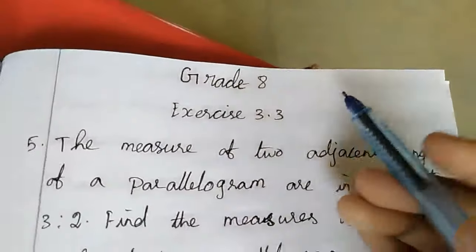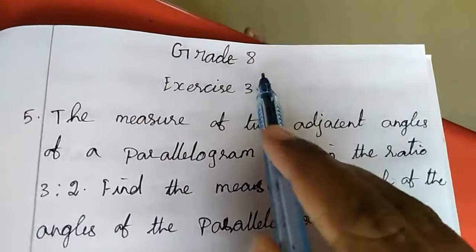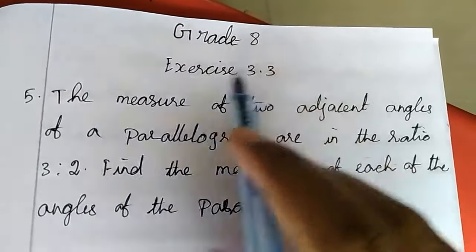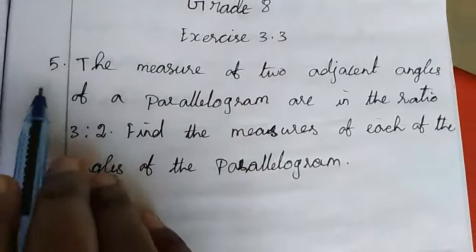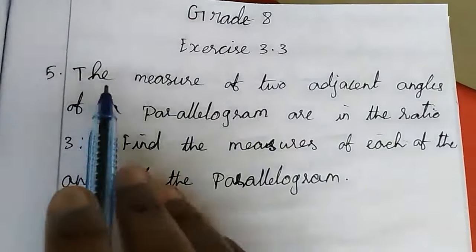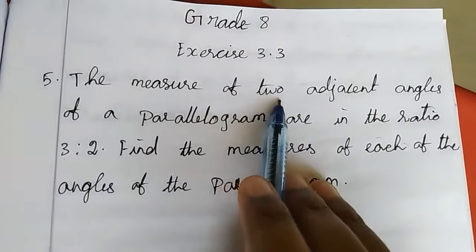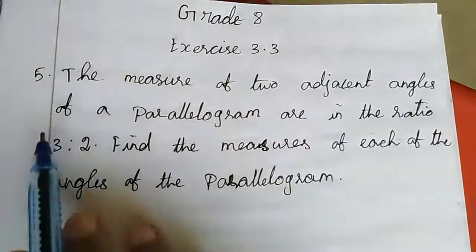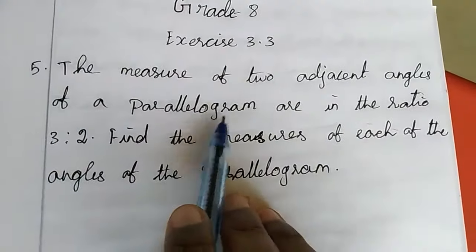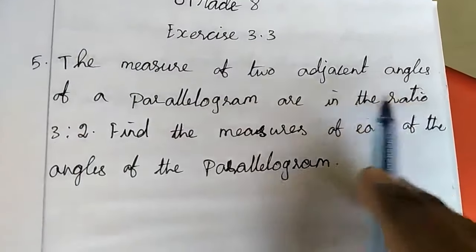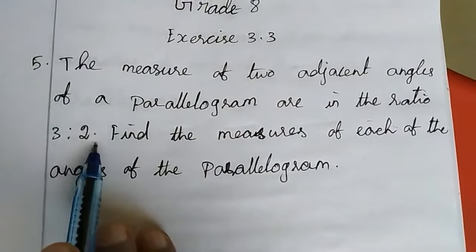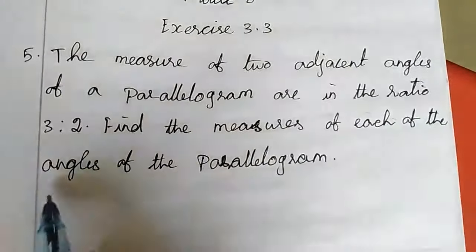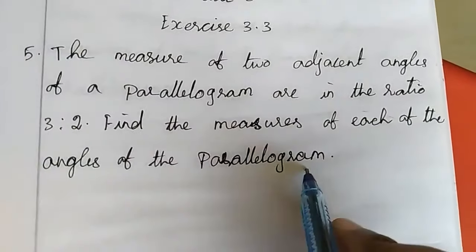Hi students. In last class we completed up to exercise 3.4. Now we will move to the sum. The measure of the two adjacent angles of a parallelogram are in the ratio 3 is to 2. Find the measure of each of the angles of the parallelogram.